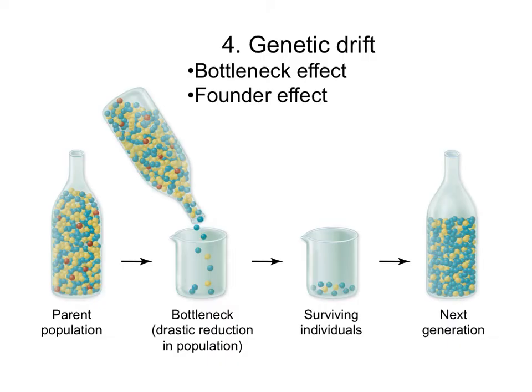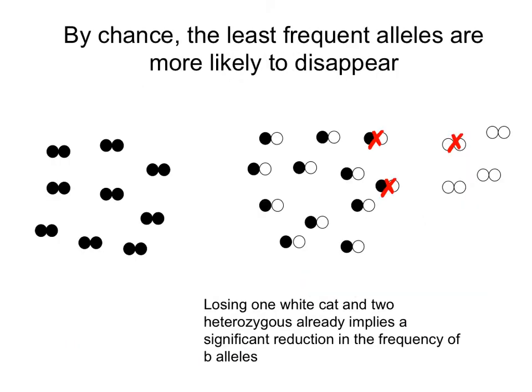The other possibility is the founder effect. This is when a few individuals from a main population go and colonize a new area. Those individuals that make the trip will unlikely have the same genetic composition as the main population, so they will have only a few of the alleles present in the mainland, changing the genetic composition of that new population. Genetic drift has a very important effect in small populations — just losing one individual with a rare allele is enough to throw off the allele frequencies. In our cat population, if three cats get run over by a car and they happen to have the white allele in greater proportion, now the white allele will be more rare in the population than it used to be.